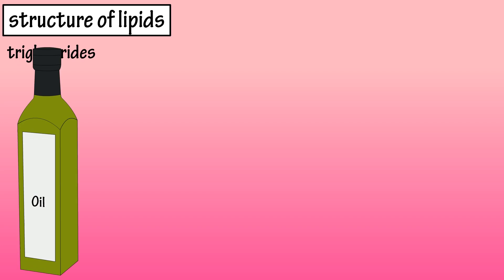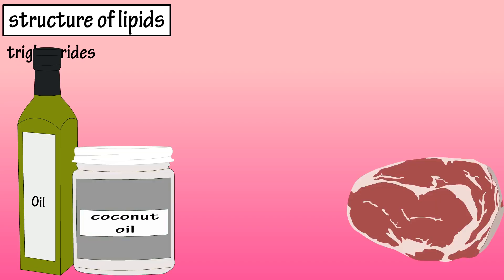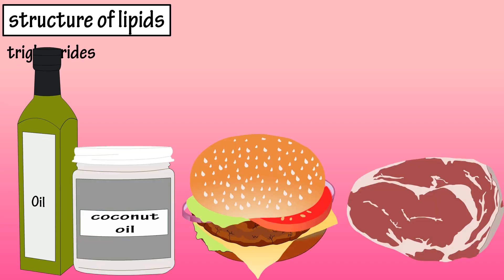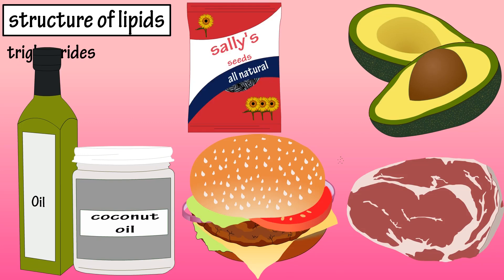Triglycerides are found in many food items, such as vegetable oils, coconut oil, beef, fast foods, avocados, and many different seeds.